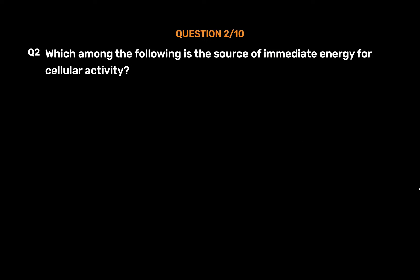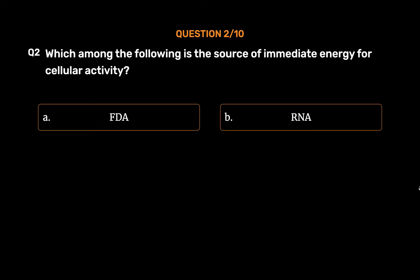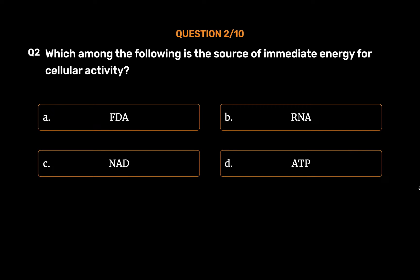Question No. 2. Which among the following is the source of immediate energy for cellular activity? Option A: ADP. Option B: RNA. Option C: ADP. Option D: ATP. The correct answer is Option D: ATP.